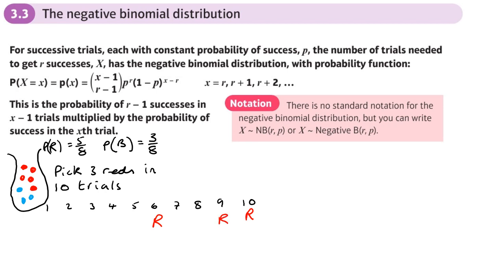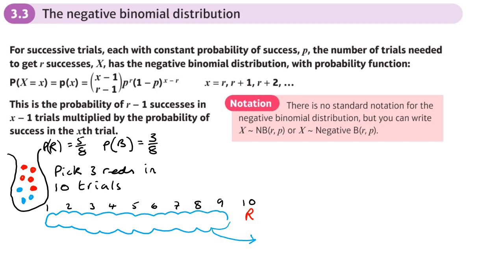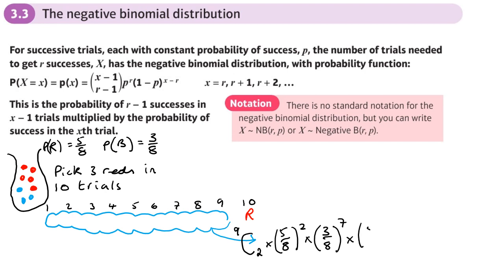As these two reds move around in the first nine trials, how can I work out how many different ways there are of getting two successes? I want two successes in these nine, which means I must get seven failures. I can work out the number of ways using nCr — two successes from the nine — and then I want the final success to happen at the end.